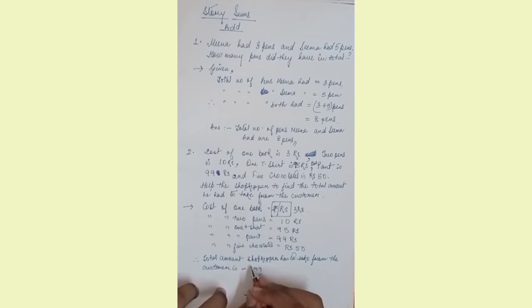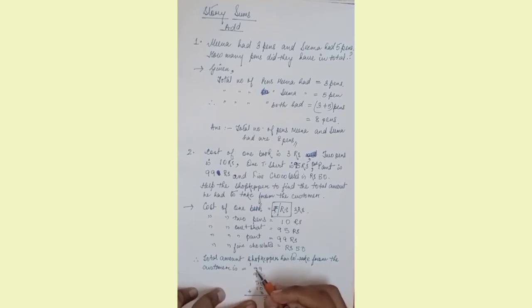So 9 plus 5 you will get 14, 14 plus 3 is 17. To do all these sums you have to be more clear with the addition.